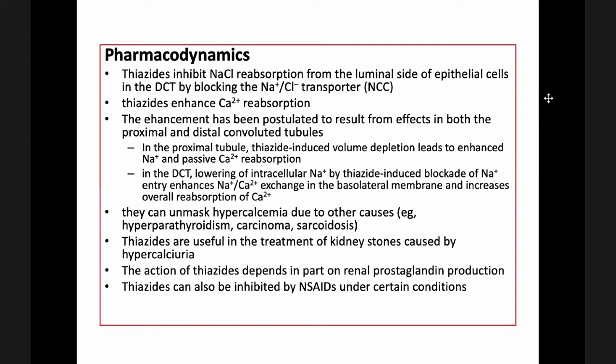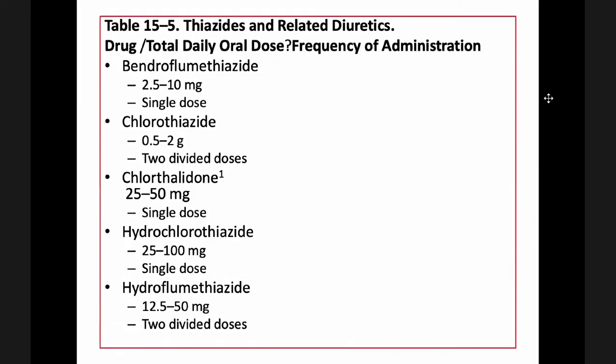Thiazides are also useful in the treatment of kidney stones caused by hypercalciuria. The action of thiazides also depends in part on renal prostaglandin production and can be inhibited by NSAIDs under certain conditions. Examples of thiazides and their corresponding doses include bendroflumethiazide, chlorothiazide, chlorthalidone, hydrochlorothiazide, and hydroflumethiazide.